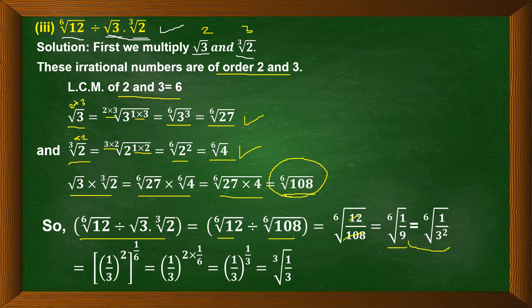Now 9 can be written as 3 square and 1 as 1 square, so in exponential form we write 1 by 3 whole square. The 6th root can be written as power 1 by 6. We have power 2 inside and 1 by 6 outside, which we multiply together: 2 and 6 cancel to give 3. So we get 1 by 3 raised to power 1 by 3. Converting back to radical form — denominator becomes the root, numerator becomes the power — we get cube root of 1 by 3. This is the final answer.